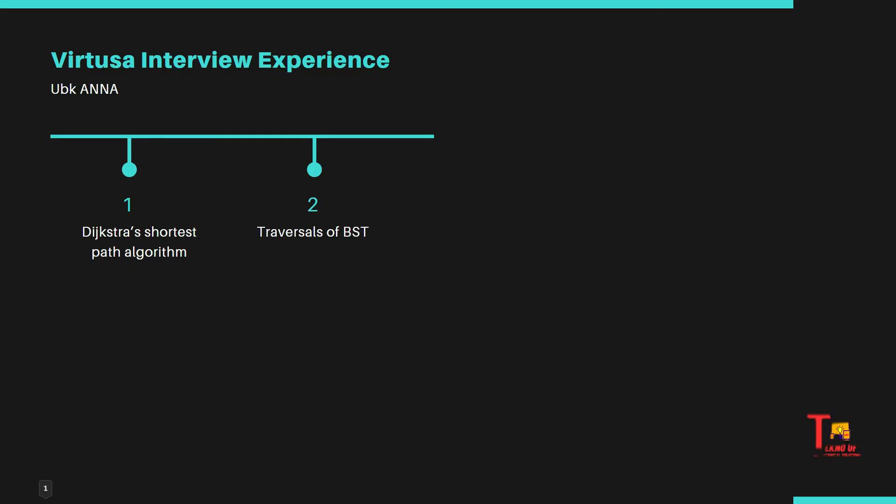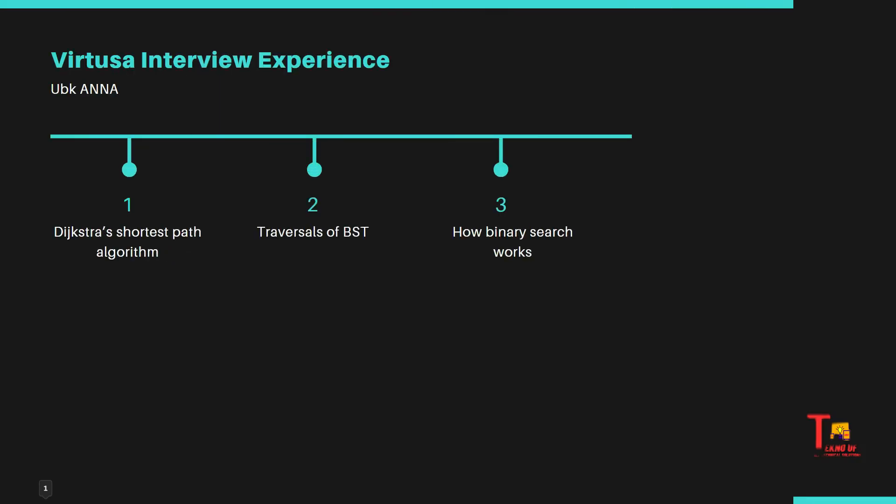The next question is: how does binary search work? It is an efficient algorithm that divides a sorted array and eliminates half at each step to find a target value in logarithmic time. For a detailed answer, go through the link in the description.